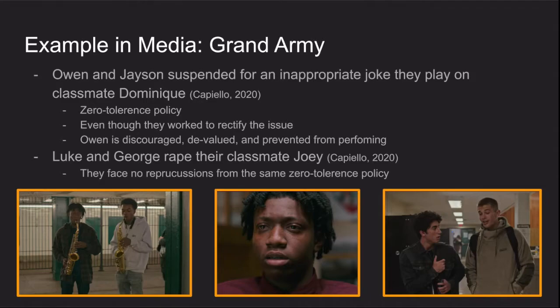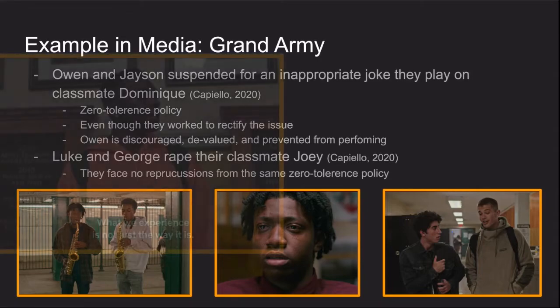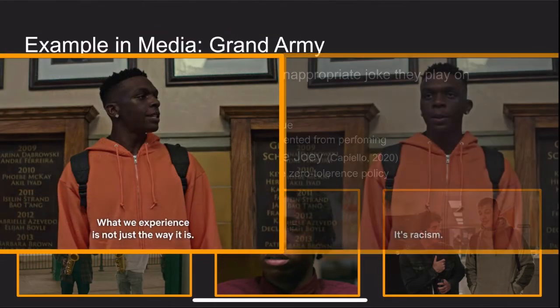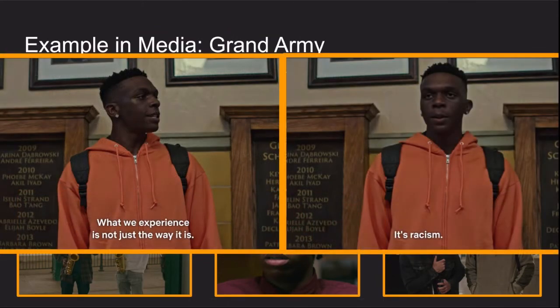Contrastingly, another storyline follows a character named Joey as she deals with being raped by two of her white male peers, George and Luke. They were arrested, but after it is concluded that Joey has insufficient evidence to claim that they had raped her, George and Luke were released and went back to school without any repercussions from the same zero-tolerance policy that suspended Jason and Owen. The Black Student Union protested the discrimination against Owen and Jason, and one of the members, John, made a speech that includes a very powerful quote.